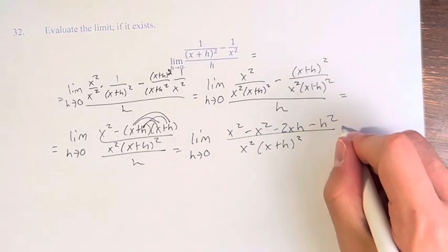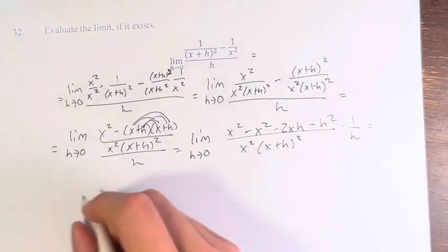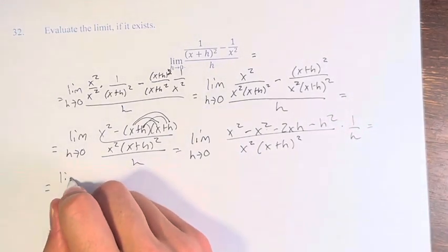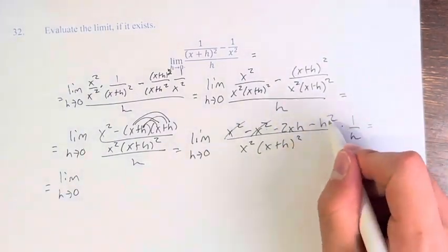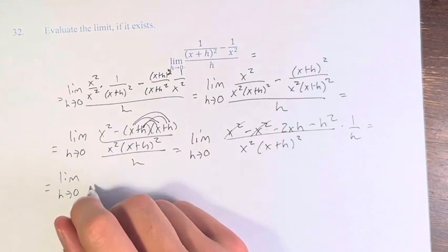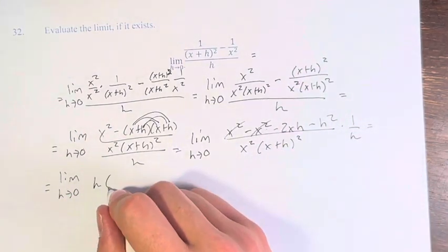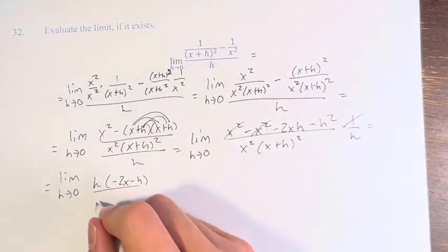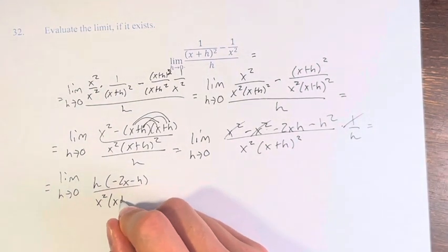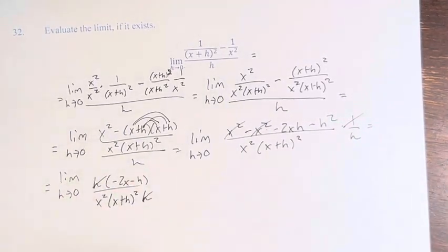This is equal to the limit as h approaches 0. The x squared and x squared cancel, leaving us with negative 2xh minus h squared. We factor out an h on top, leaving negative 2x minus h. This is over x squared times (x plus h) squared times h. The h's cancel.